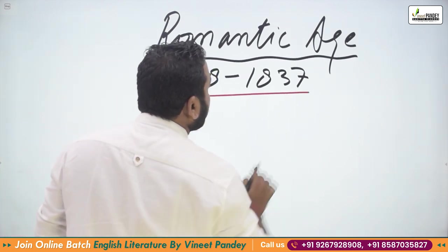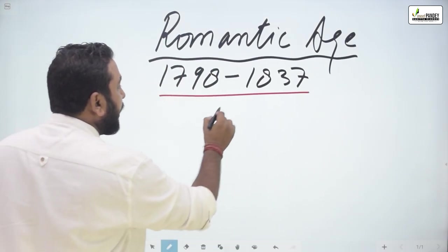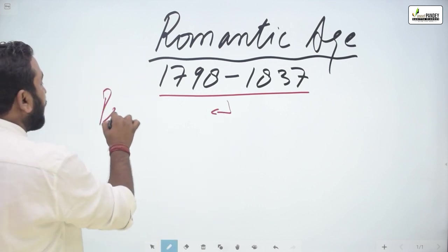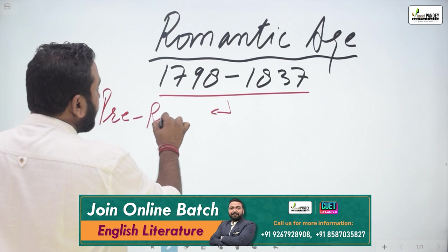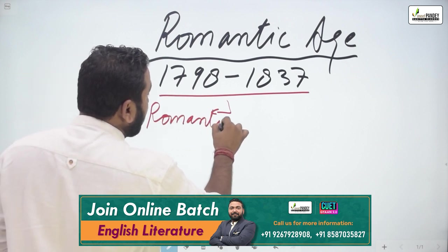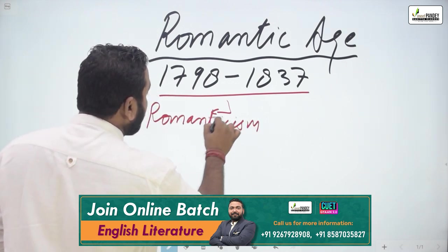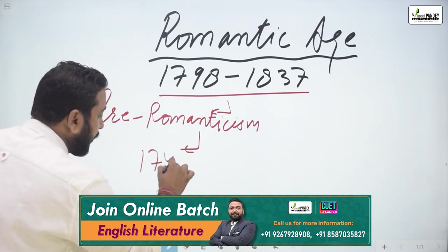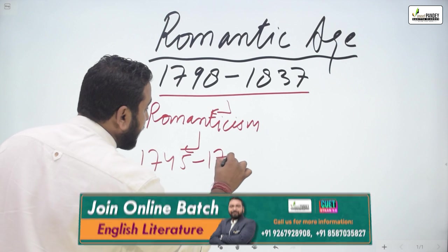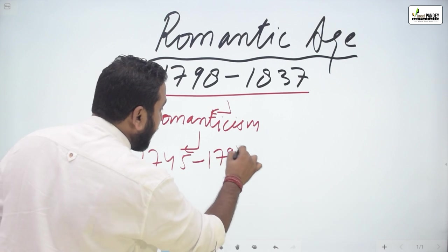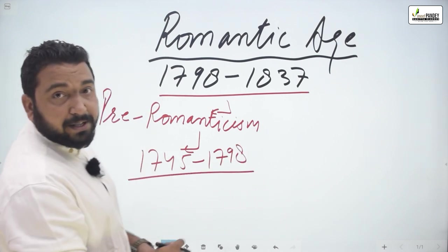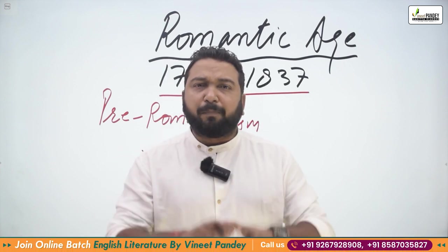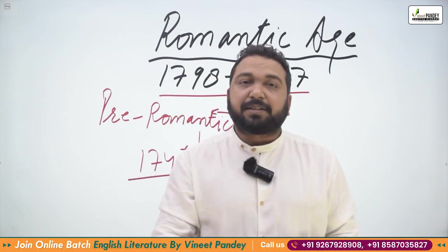The Romantic Age actually comes after Pre-Romanticism. Pre-Romanticism covers the period 1745 to 1798. To understand this properly, we need to go back further — to 1660, when the Restoration happens.